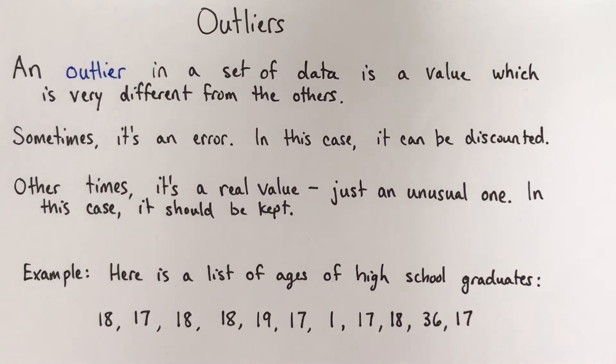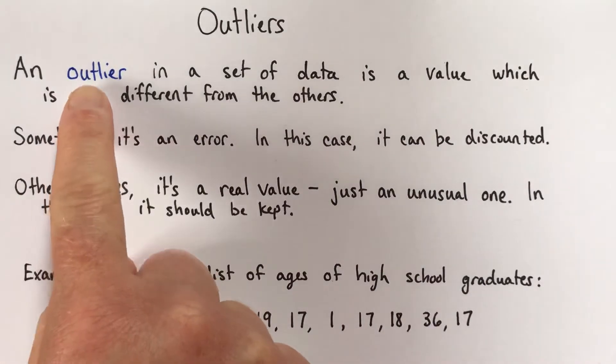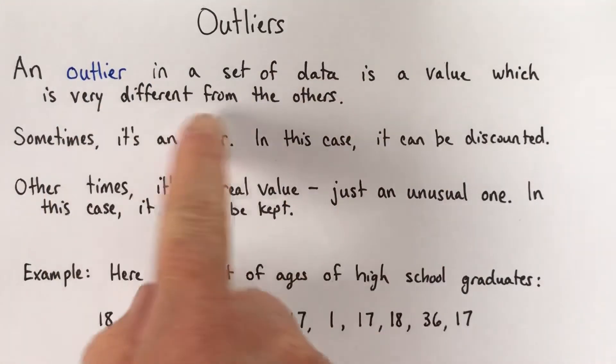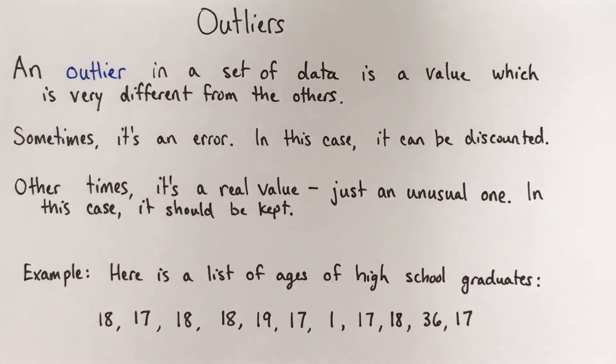Hi, we're going to talk about outliers. So if we have a data set, maybe a list of numbers, an outlier is a value that's very different from the others. We'll look at an example in a minute, but it's really noticeably different from the other values.